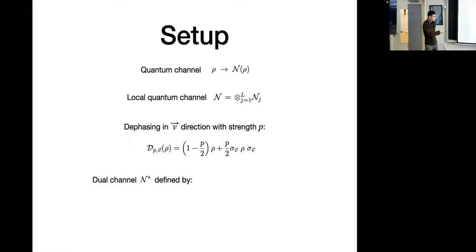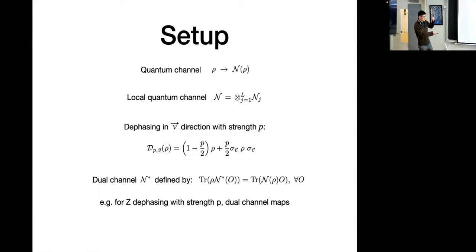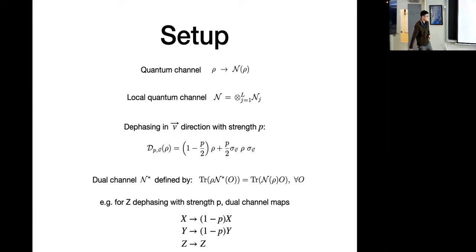It would be convenient to define what's called a dual channel N-star, which you can think of as the Heisenberg picture for channels. The original channel N acts on the state rho, while the dual channel acts on operators and is defined to reproduce all the right expectation values — just like the usual Heisenberg picture. For example, say you want to apply dephasing in the Z direction with some strength P. One can check that the dual channel maps the Pauli operators as follows: it suppresses the X and Y Pauli operators by a factor (1-P) and keeps the Z operator unchanged.